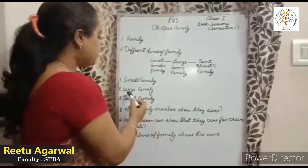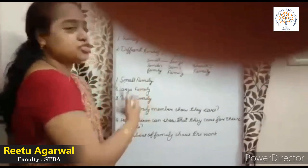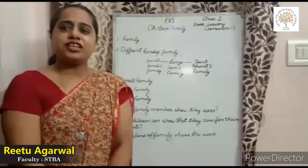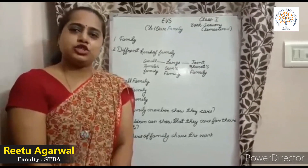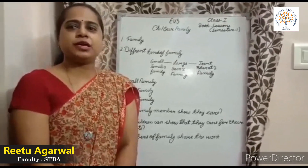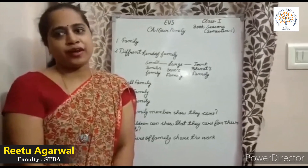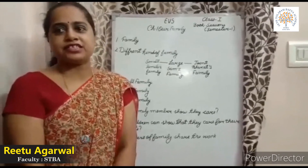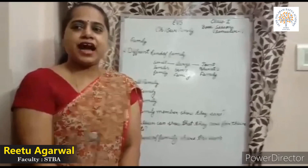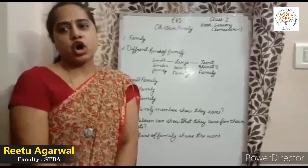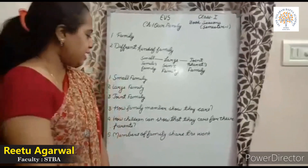The second one is large family. A large family is usually made up of grandparents, children, and an aunt or uncle.